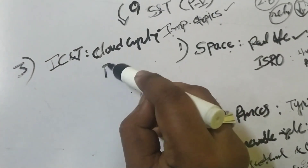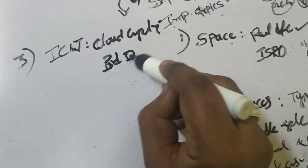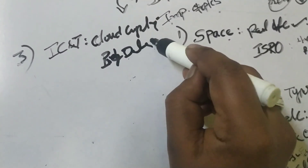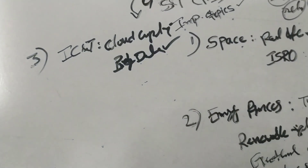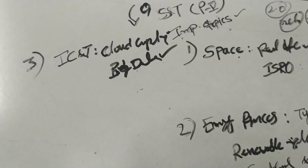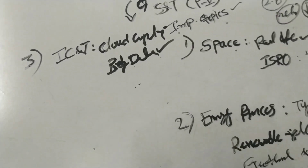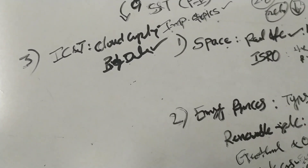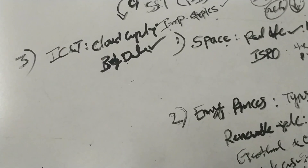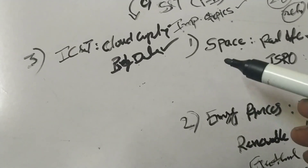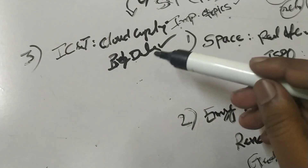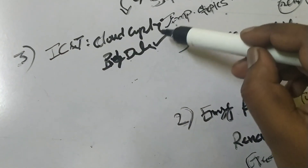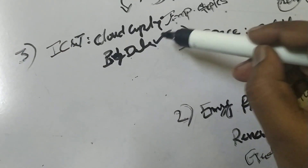Next is big data. There are three types of data: structured data, semi-structured, and unstructured. There are features and applications, and also some problems. Big data can be uploaded via cloud services.